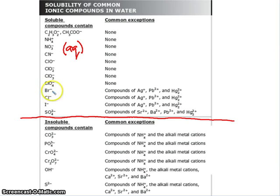If we put a bromide compound into water, we will probably get an aqueous solution unless the cation is silver, lead 2, or this mercury ion. So when we say these are exceptions, that means we put them in water and they would stay solid.